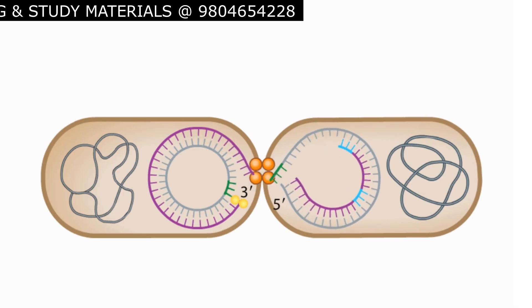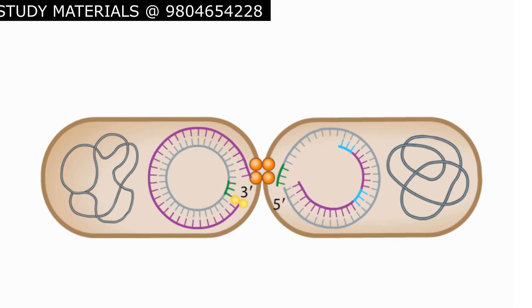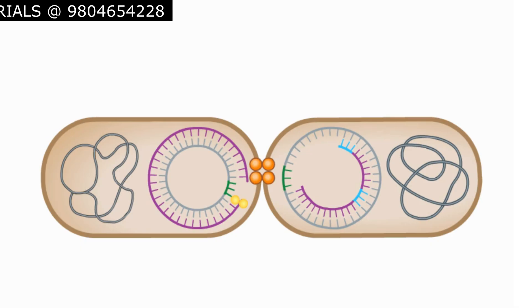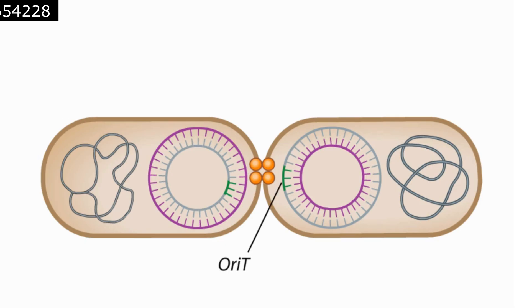When the transfer is complete, the relaxase enzyme ligates the 5 prime end it was holding to the 3 prime tail of the transferred strand. Thus, the last portion of the F factor that is moved to the recipient is ORI-T.